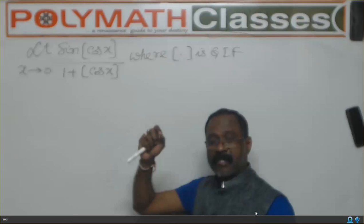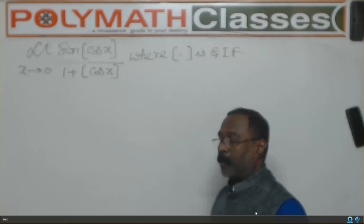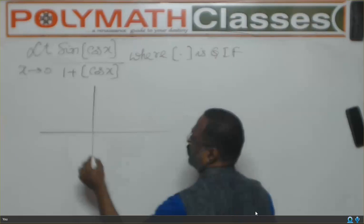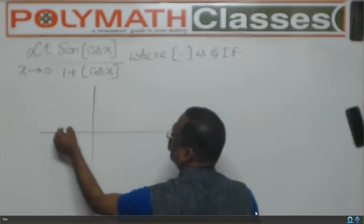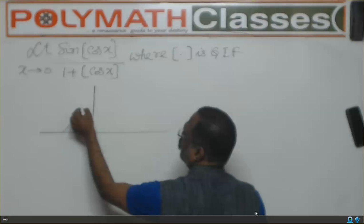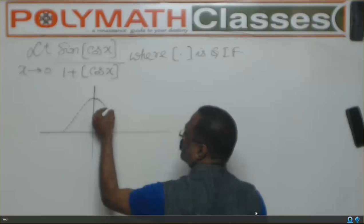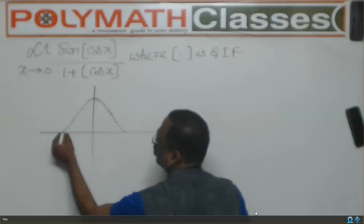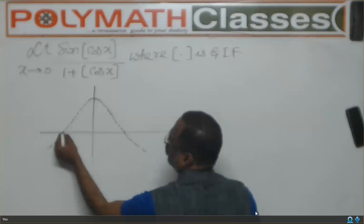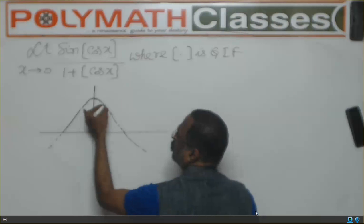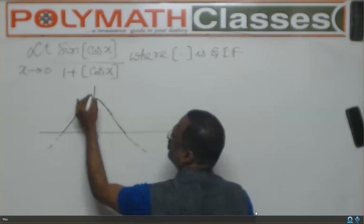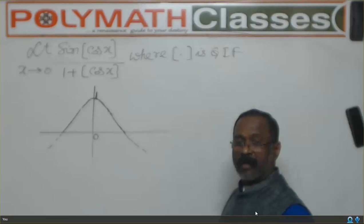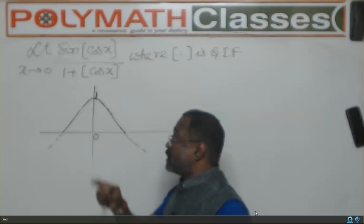If you see the cos x graph, it goes like this. At x = 0, cos x is becoming 1. We are talking about x = 0 only because x is tending to 0, and we are interested in the value of step cos x here.